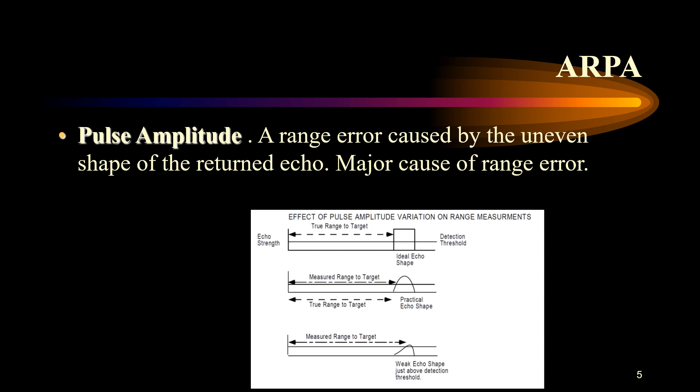The practical echo shape gives an indication of how echoes normally appear at sea and the strength of the echo received when radio waves hit a target. There is also a weak echo shape that is just above the detection threshold — meaning radar waves can pass around or through it and fail to detect the target. This can be very dangerous for navigation, especially at night when you cannot see the target visually either.